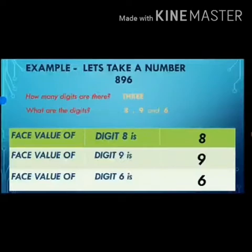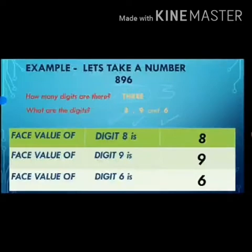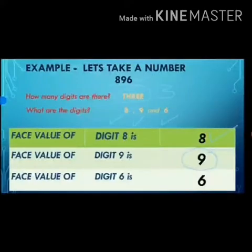Let's understand face value by taking an example. In this slide we have taken the number 896. How many digits are there? Yes, 3 digits. What are the digits? 8, 9, and 6 — these are the digits. The face value of digit 8 in 896 is 8. The face value of digit 9 in 896 is 9. The face value of digit 6 in 896 is 6, because the face value is nothing but the value of the digit itself.